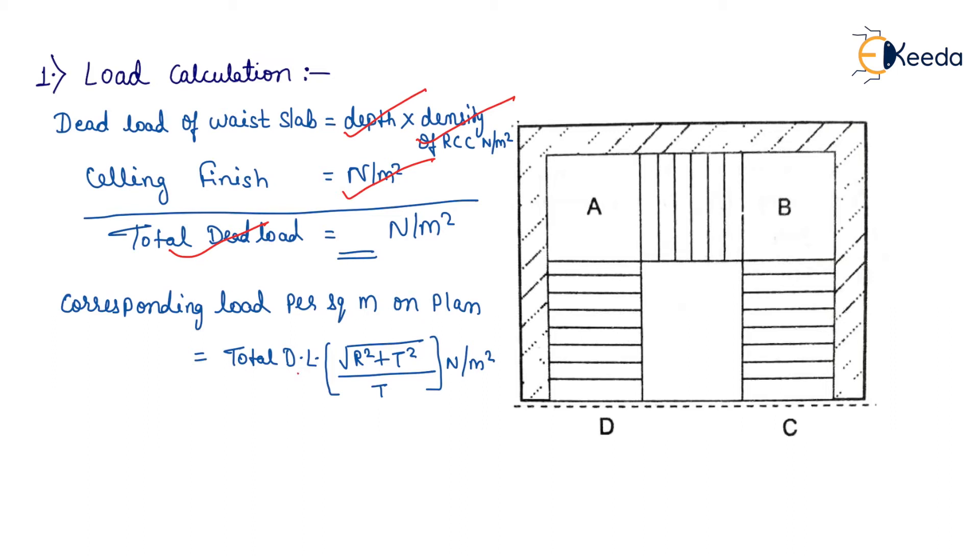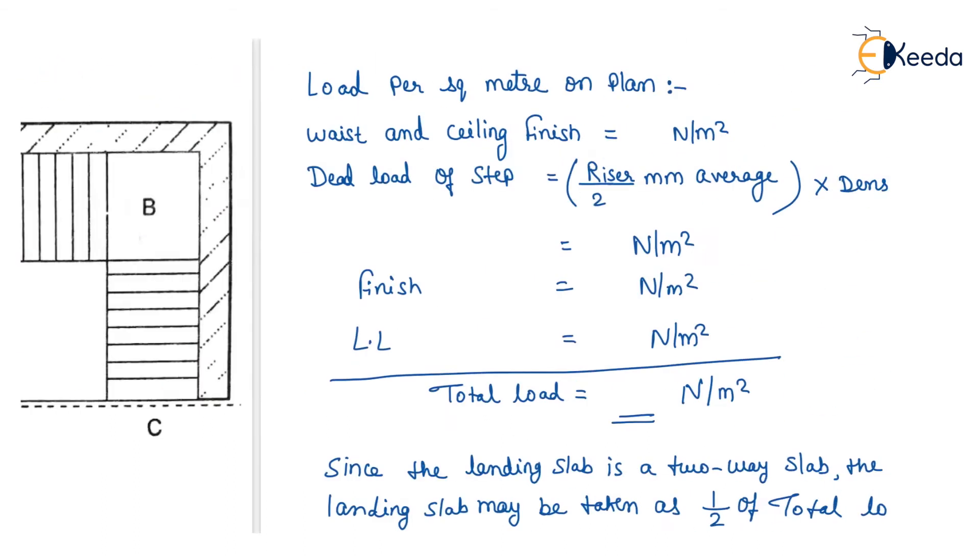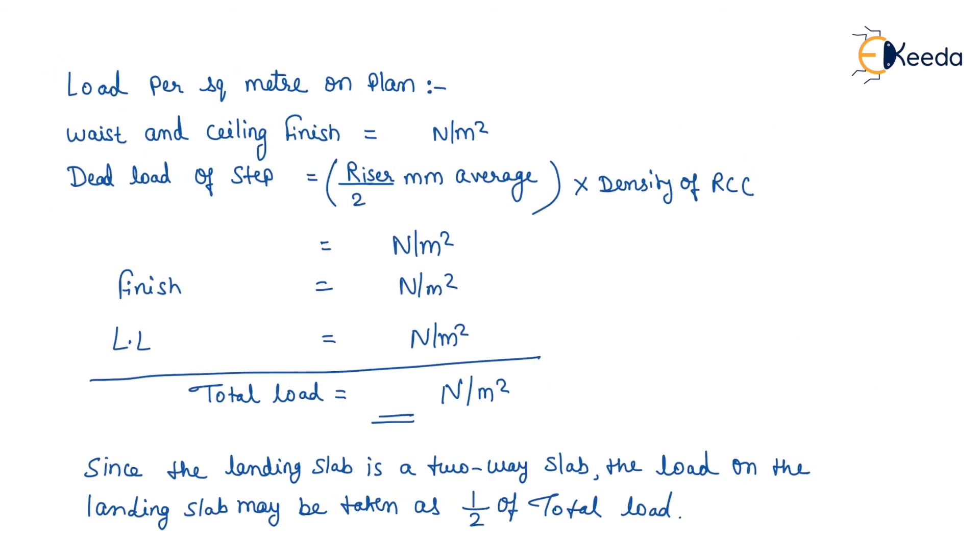Where R is riser and T is tread. Load per square meter on plan for waist and ceiling finish will be calculated in Newton per meter square.